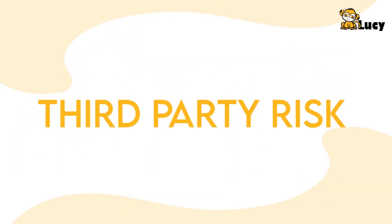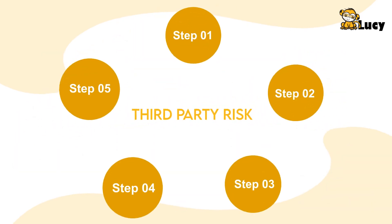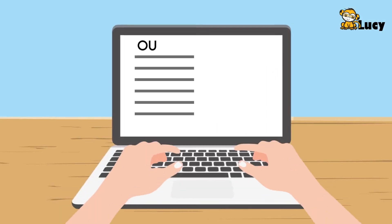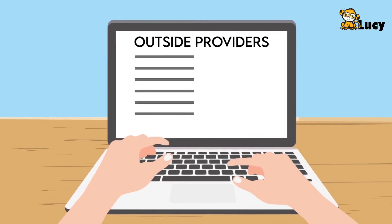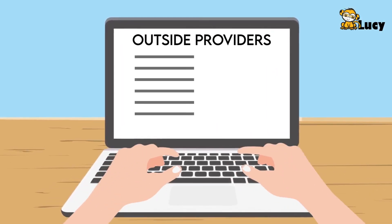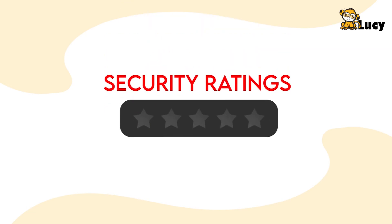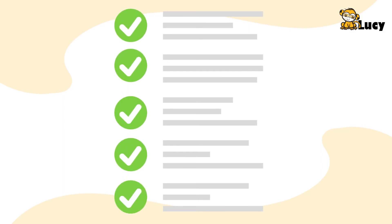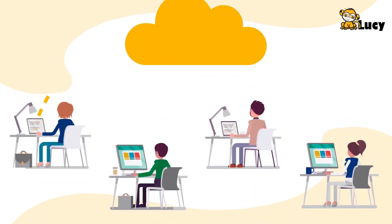To manage third-party risk, follow these steps. Step 1: Create a list of all outside providers and their security habits. Step 2: Evaluate each partner's security standing via security ratings or security questionnaires. Step 3: Tightly manage whatever access a third party has to your network.